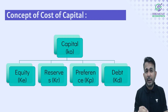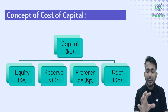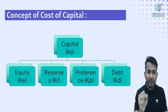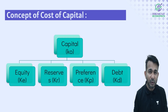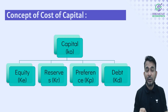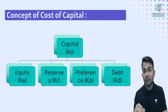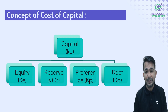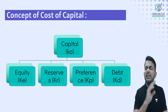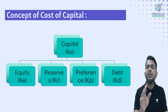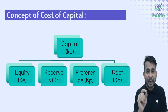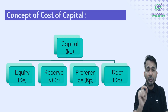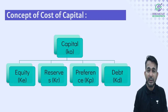Cost of capital is made up of four ingredients. The first one is equity, second is reserves, third is preference, and last is debt. I'll start with the last one first — that is cost of debt.